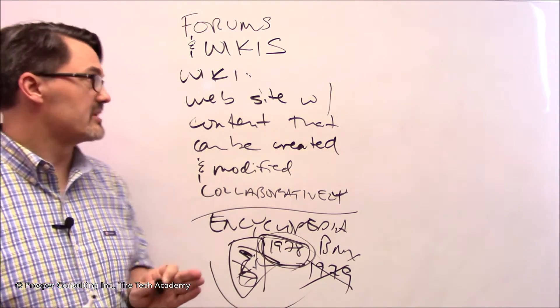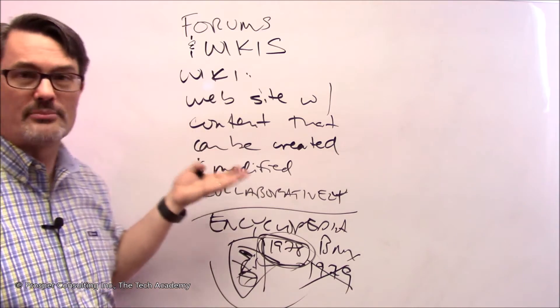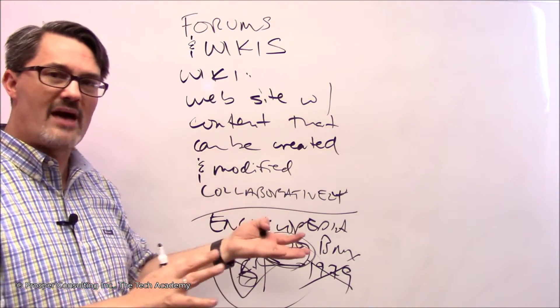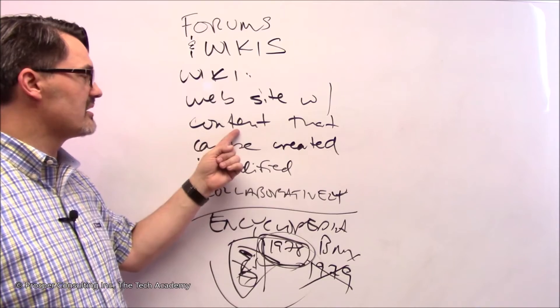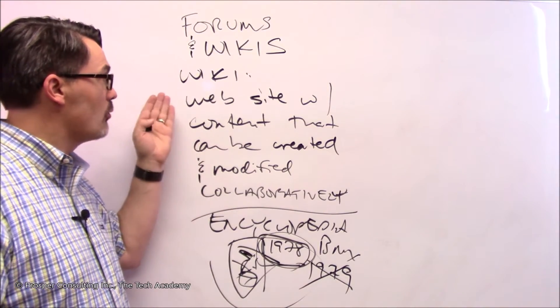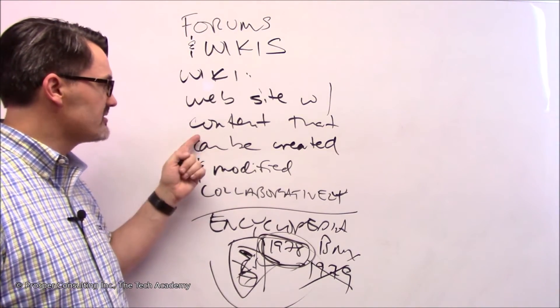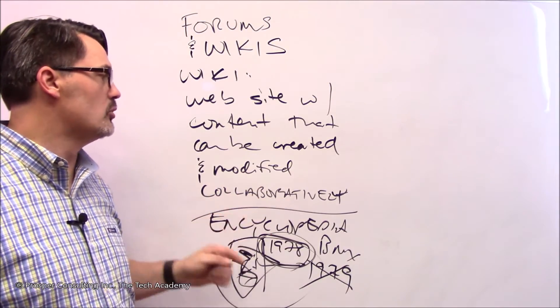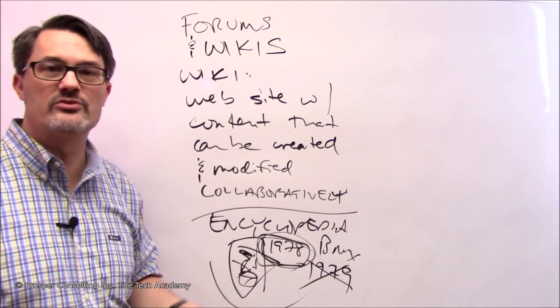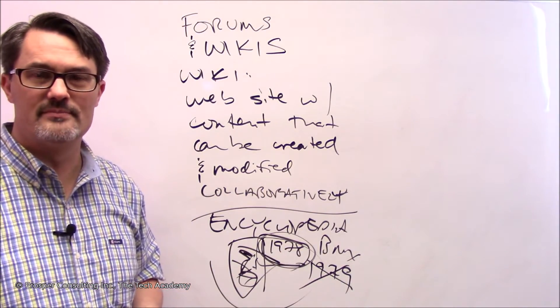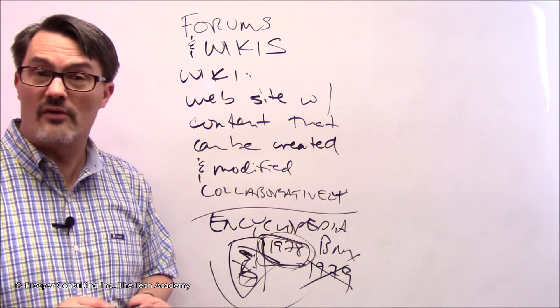So let's step back to the basic concept again. A wiki is a website with a specialized purpose, and that purpose is to provide a platform for publishing content. And the unique aspect of how that website works is that that content can be created, modified, and removed collaboratively by anyone who's authorized to do so.